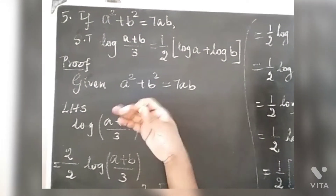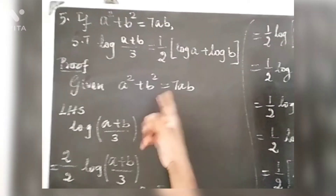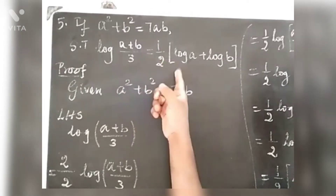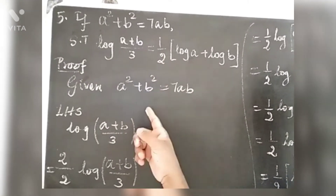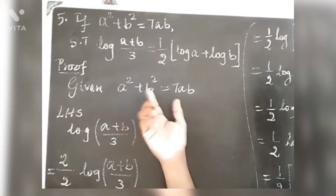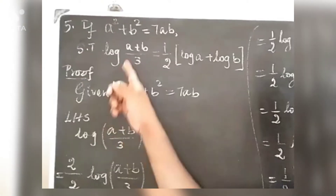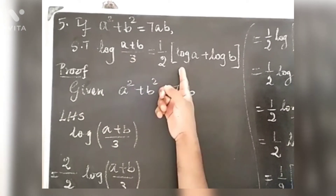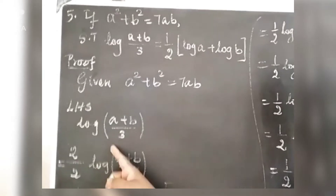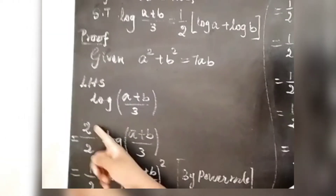Take the LHS and work from the other side. Now, let's do a small step. Let's do this with a 2 by 2 approach.